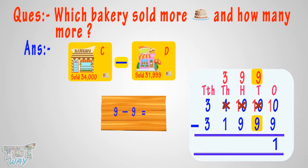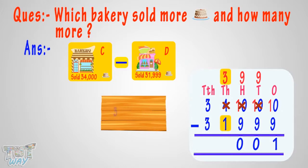At 10's place, 9 minus 9 equals 0. Write 0 at 10's place. At 100's place, 9 minus 9 equals 0. Write 0 at 100's place. At 1000's place, 3 minus 1 equals 2. Write 2 at 1000's place. At 10,000's place, 3 minus 3 equals 0. Write 0 at 10,000's place.